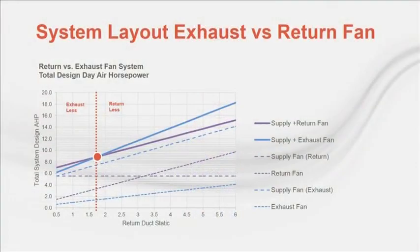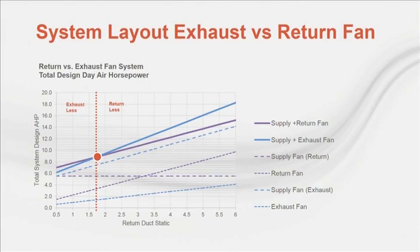Depending on the percent outside air, results may differ. In this example, the crossover point on air horsepower — the total power required from the fans — is approximately 1.75 inches external static pressure on the return duct. This means that at 1.75 inches and above, a return fan system requires less power from the fans. This crossover point will vary based on fan power requirements, which depends on how efficient each fan is and the operating point on that fan.